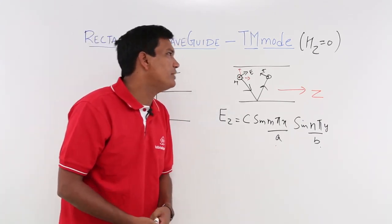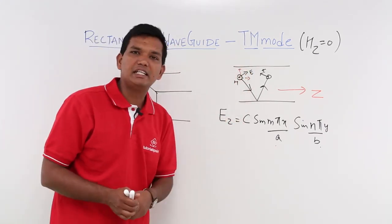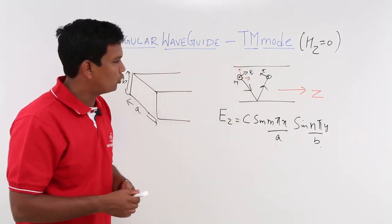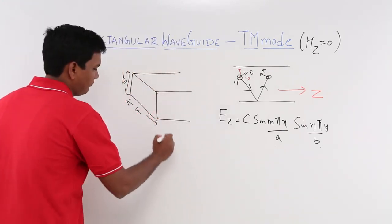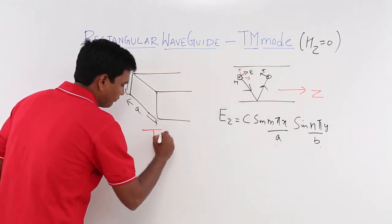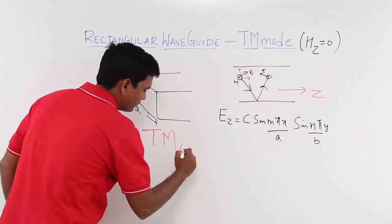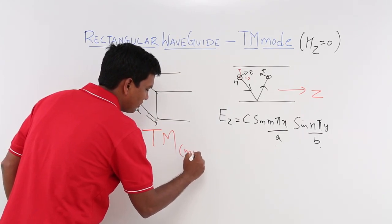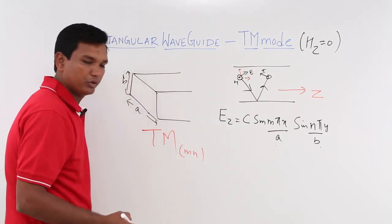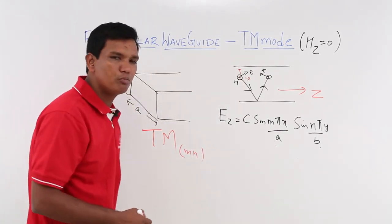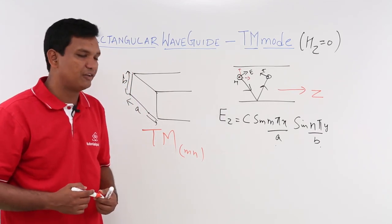Now, if somebody asks, if I am writing TM and some mode, it will be m comma n. This is what they call a mode. Which modes will exist for an electric field? Let us see that.